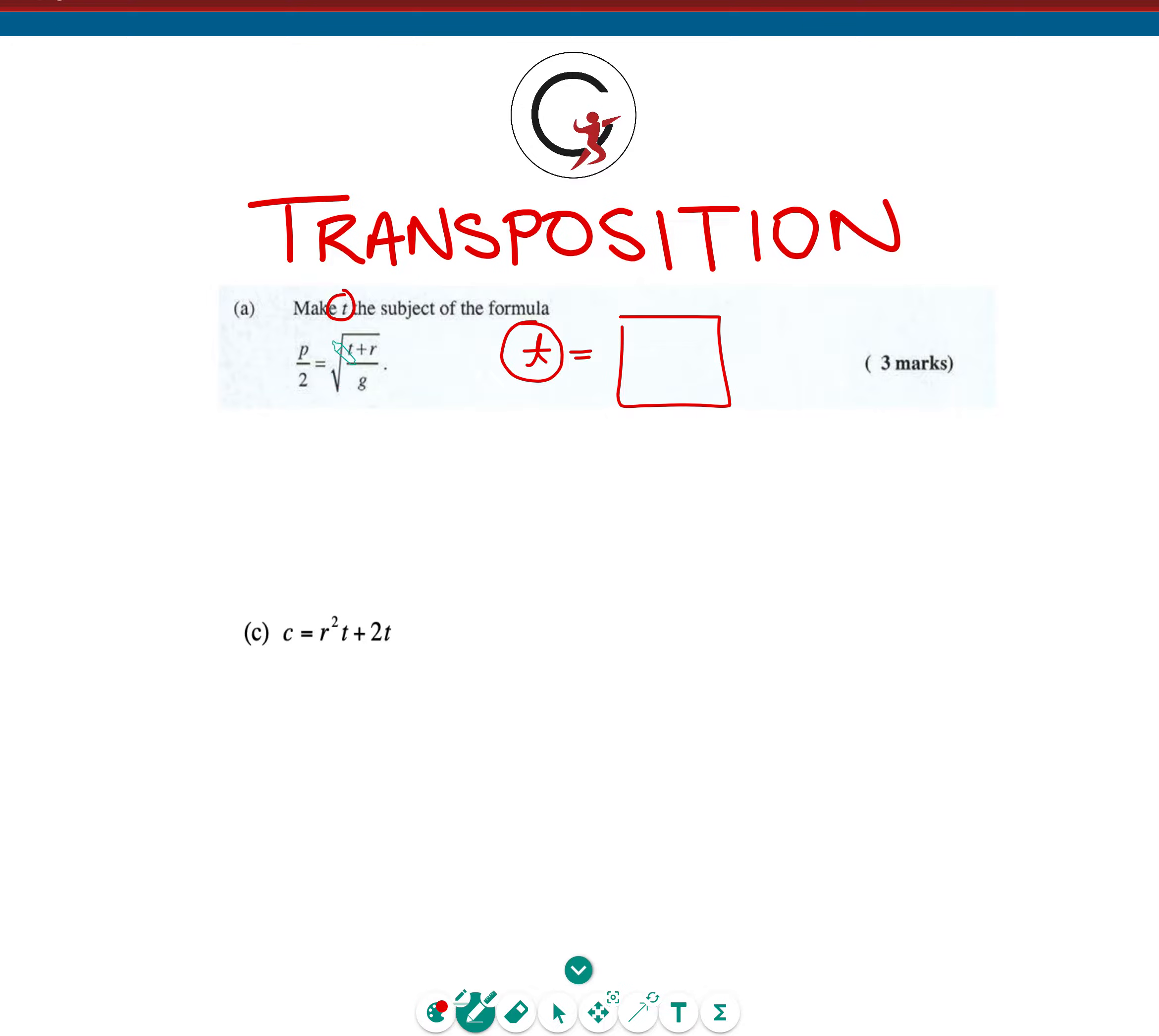Let's begin. We see the square root sign wrapping up everything underneath it. The way that we get rid of a square root sign is to do the opposite of a square root, which is squaring it. We're going to square both sides because the first rule of an equation is whatever you do to one side, you must do to the other. We're going to square both sides, giving us P squared over 2 squared, and we know 2 squared is 4, so let's just put 4. That's going to be equal to T plus R over G.